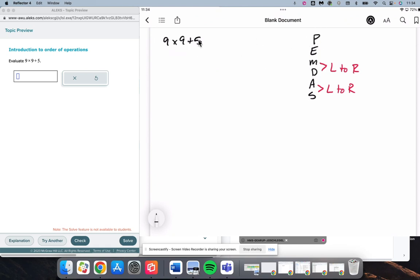We look for parentheses, there are none. We look for exponents, there are none. Then we look for multiplication and division, and we say, oh, there is 9 times 9. 9 times 9 makes 81. We bring everything else down exactly as it was. 81 plus 5 is 86.